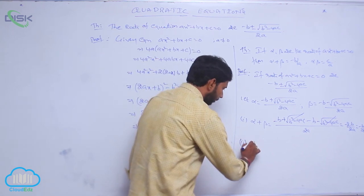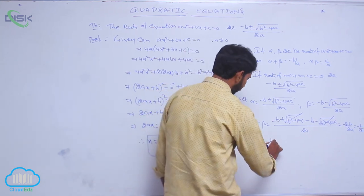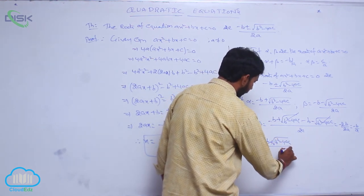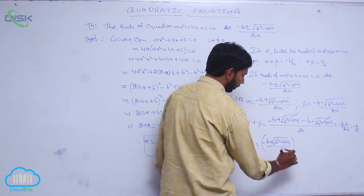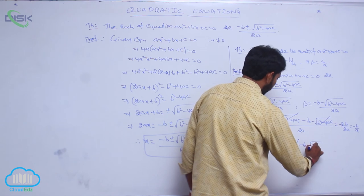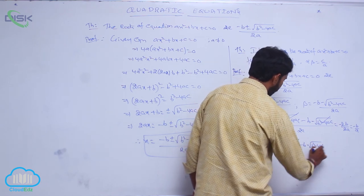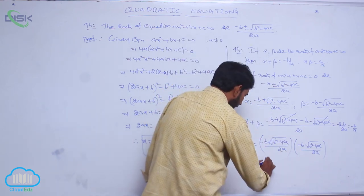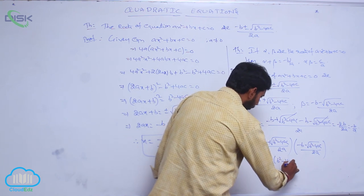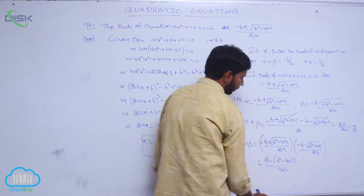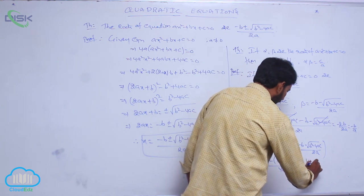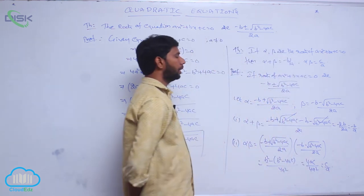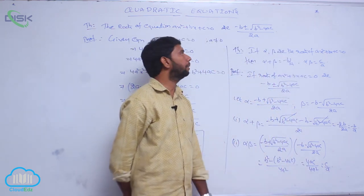Product of roots: α·β = [(-B + √(B² - 4AC)) / 2A] · [(-B - √(B² - 4AC)) / 2A]. This is of the form (A+B)(A-B) = A² - B², giving (B² - (B² - 4AC)) / 4A² = 4AC / 4A² = C/A. So product of roots αβ = C/A, and sum of roots = -B/A.